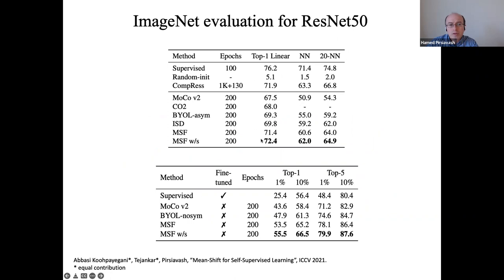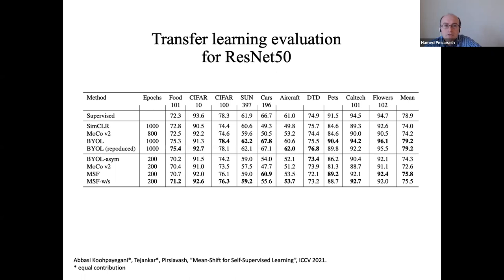The results show that MSF achieves around 72% on ImageNet with ResNet-50, compared to ISD at 69%, MoCo at 67%, and BYOL at similar levels. When fine-tuning with only 1% or 10% of labels, the difference is even more dramatic: supervised training with 1% of labels gives 25% accuracy, but MSF pre-trained on 100% of unlabeled data and fine-tuned with just 1% of labels gives 55% accuracy. So if you have a small labeled dataset, initializing from MSF or another SSL algorithm is very beneficial. MSF was published at ICCV 2021.